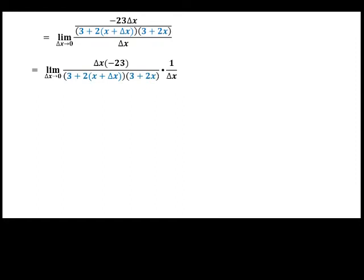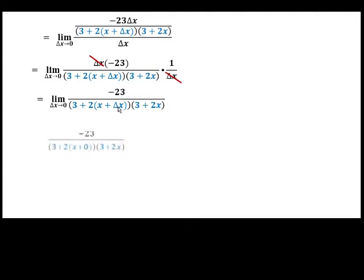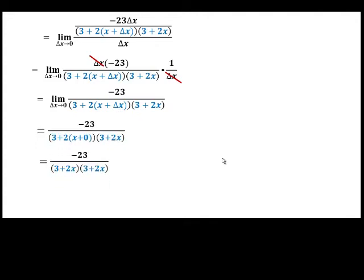Cancel out the common factor on both numerator and denominator. This is now in its simplest form. We can now evaluate the limit of this function as delta x approaches 0, or substitute delta x with 0. Simplify. So this is now the derivative: dy/dx equals negative 23 over quantity 3 plus 2x, squared.